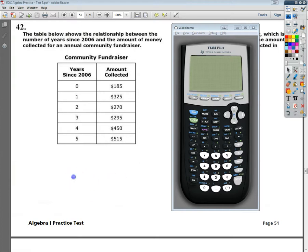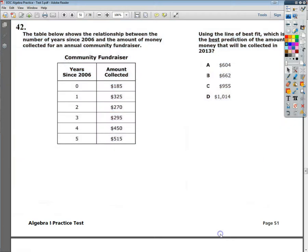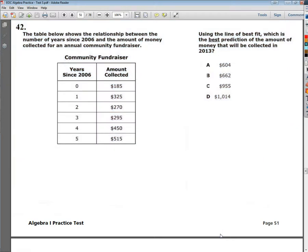And my calculator emulator is blocking the question, so that wasn't very helpful. Anyway, the question says, using the line of best fit, which is the best prediction of the amount of money that will be collected in 2013.